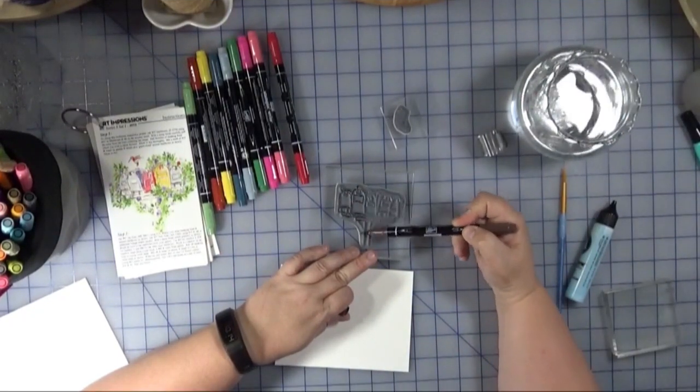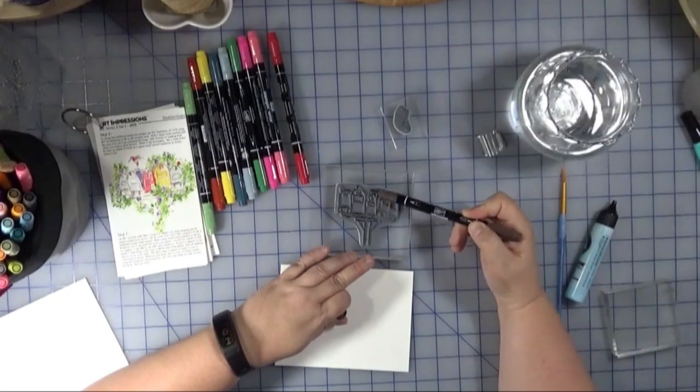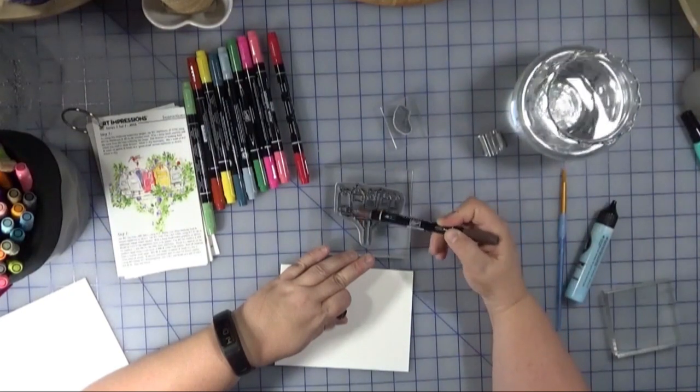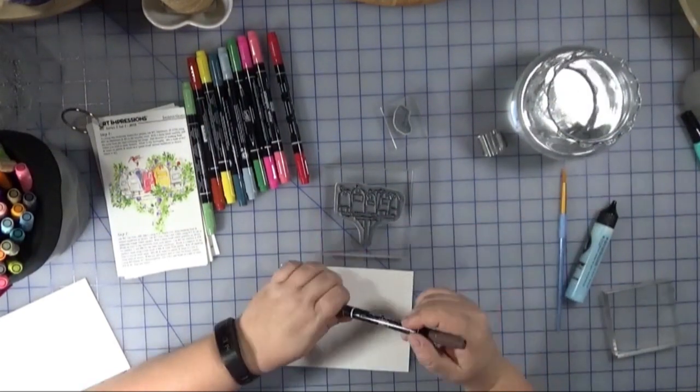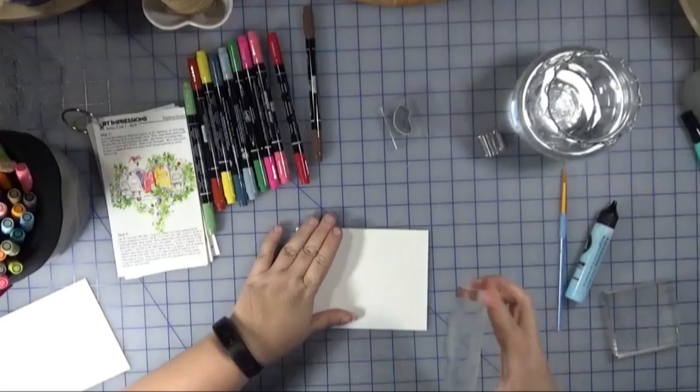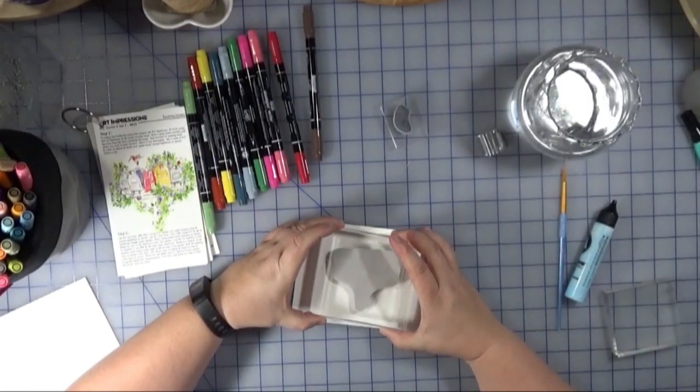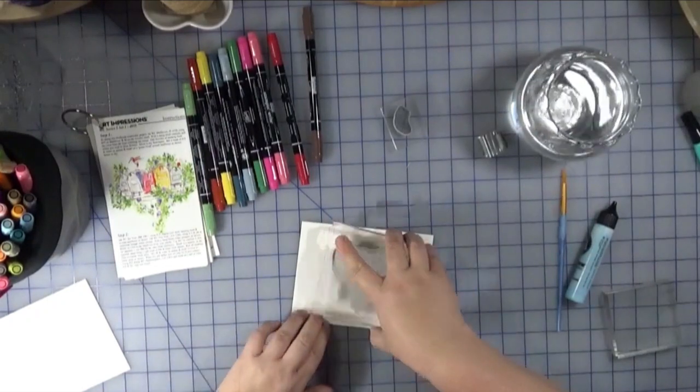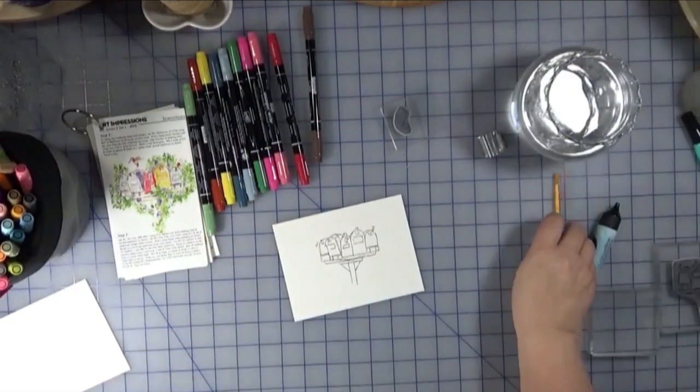Now if I were to go back and do this again, I think I would choose a lighter brown like maybe a Soft Suede, which would have worked a little better to make the wood base look a little less dark. I just colored it with the brush tip of the marker, gave it a little bit of a huff, and then stamped that on the watercolor paper.